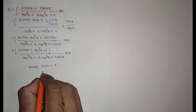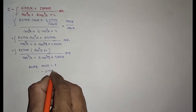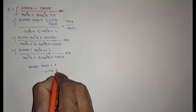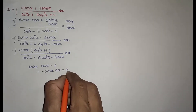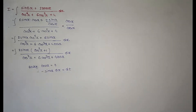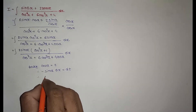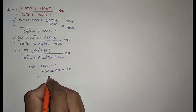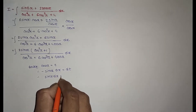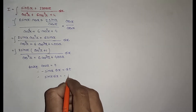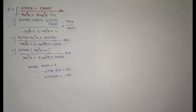Take cos x equal to t. We get minus sin x dx equal to dt, so sin x dx equals minus dt.